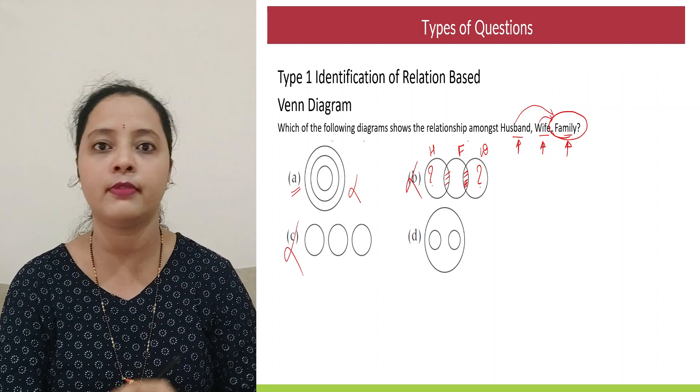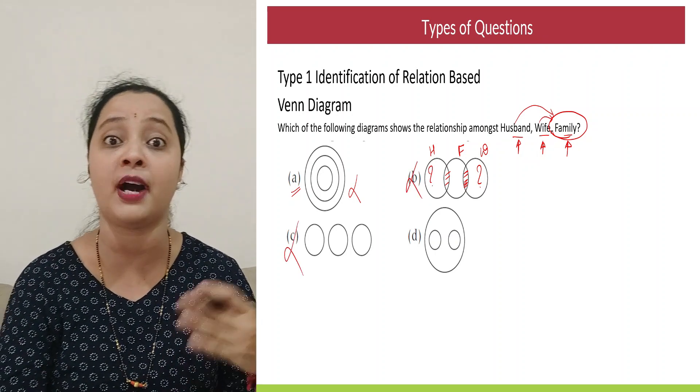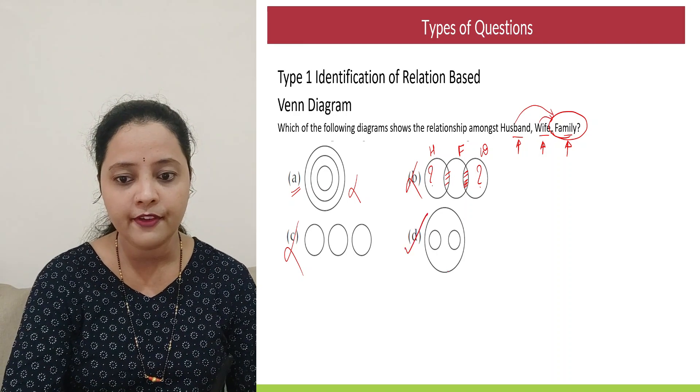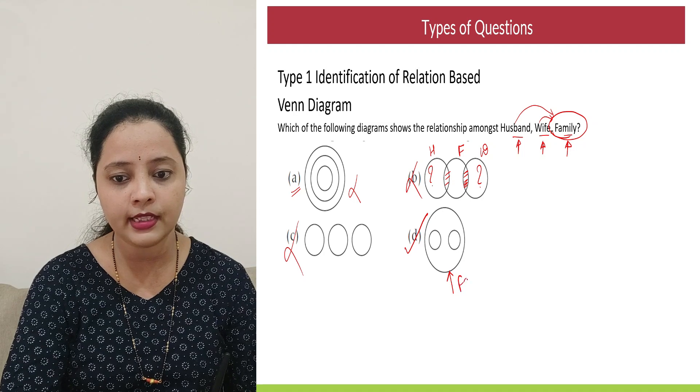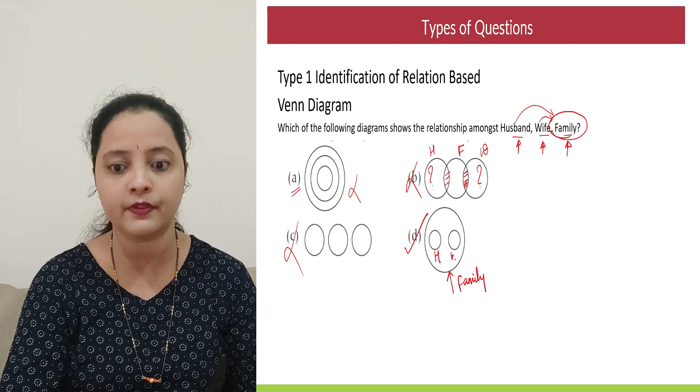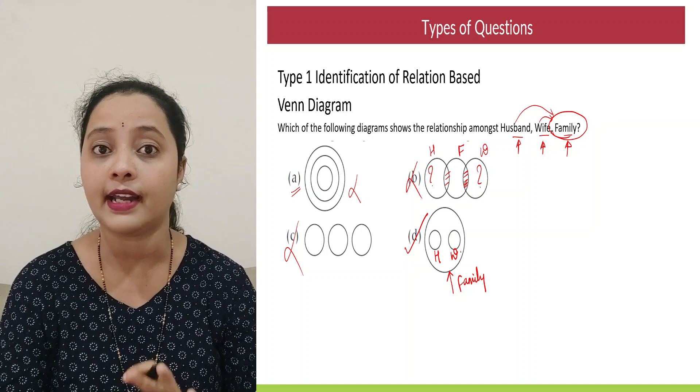Option C is impossible. Because automatically I know husband and wife are part of the family. So the only diagram that fits is option D. So in option D family would be the larger circle. And this circle would represent husband and the other one would represent wife.